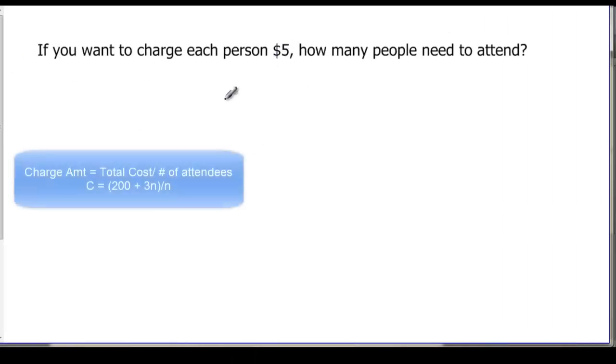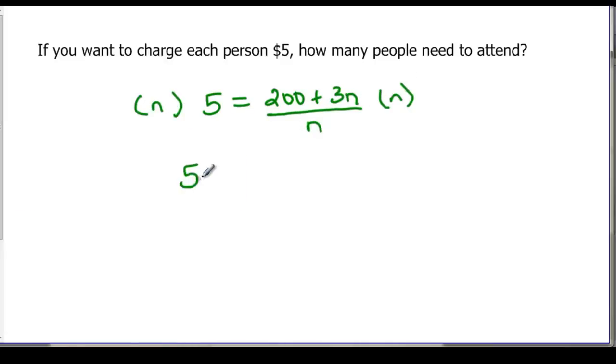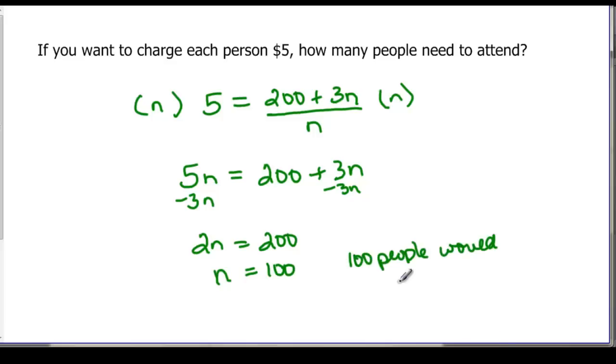So finally, if you want to charge each person $5, so that's the charge, how many people need to attend? So we have 200 plus 3N divided by N. Again we have to clear our fraction. So 5N is going to be equal to 200 plus 3N. And if I combine my N's by subtracting this 3N over here, then I'm going to have 2N is equal to 200. And N will be equal to a hundred. And remember N is number of people. So one hundred people would pay $5 each.